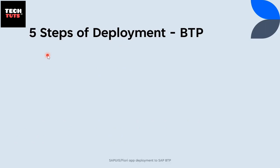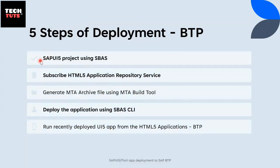Here are the five steps. By following these steps, you can deploy the SAP Fiori application to Business Technology Platform. The first step is you should have a SAP Fiori project ready in SAP Business Application Studio. Second step is to subscribe to the HTML5 application repository service in the BTP platform. Third, generate an MTA archive file using the MTA build tool. Fourth, deploy the application using SAP Business Application command line interface. And fifth, run the recently deployed Fiori app from the HTML5 applications in BTP.